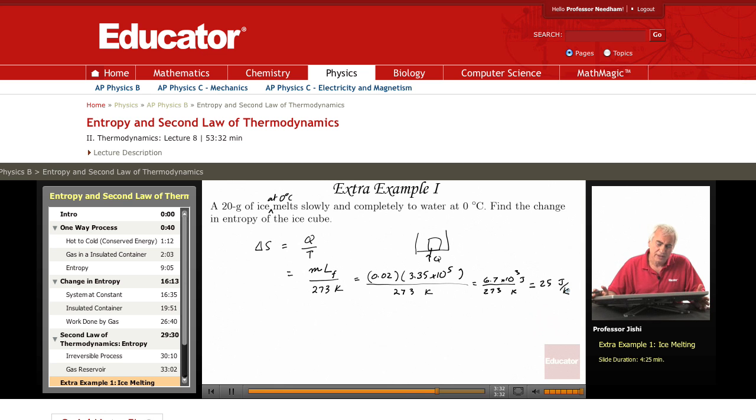Water is more disordered than ice. In ice, the water molecules sit, ice is a solid, so the molecules of water in ice, they sit at equilibrium positions, and they just move around the equilibrium position.